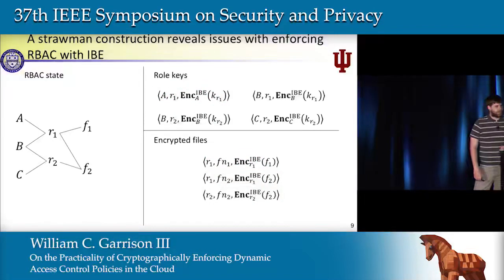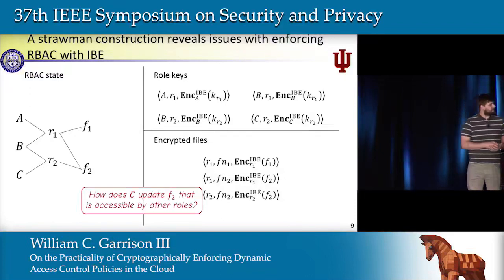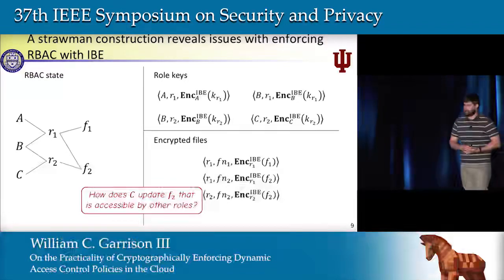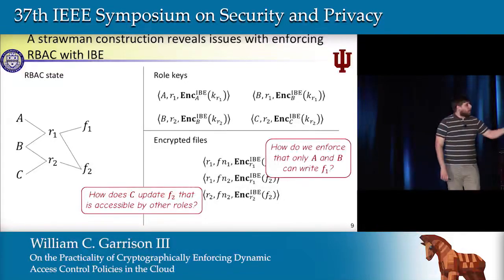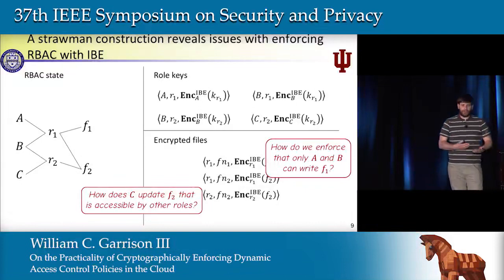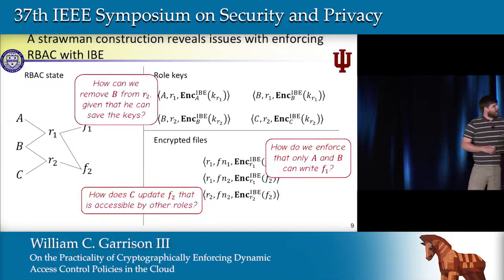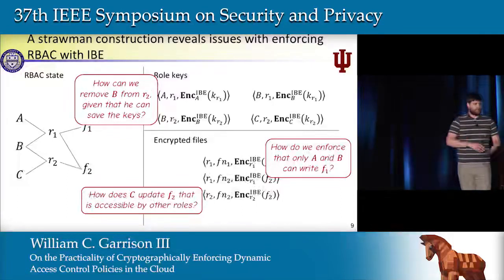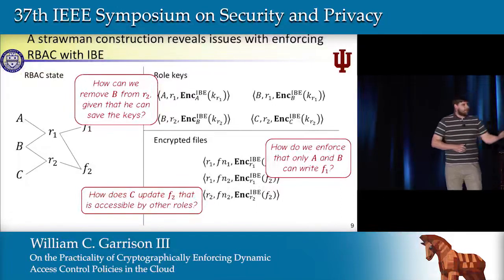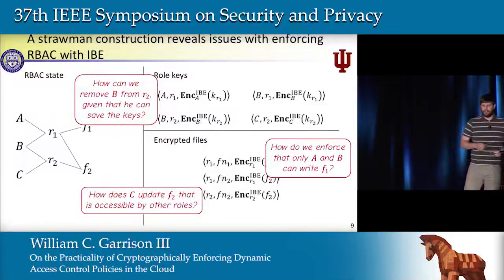But what happens when things start to change? How can user C update file 2 given that it's accessible to users in other roles? How do we enforce that only users A and B are allowed to write to file 1? In identity-based encryption, anyone who knows an identity can encrypt to it — so how do we prevent unauthorized overwrites? And how do we revoke user B from role R2, given that B is likely caching those keys locally and could continue using the private key for R2?